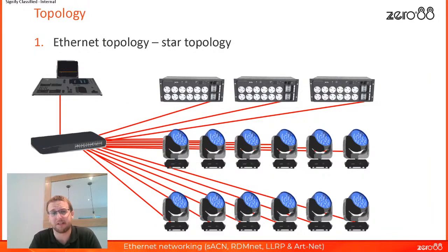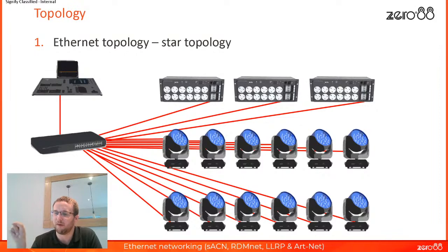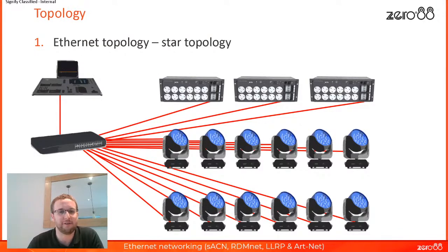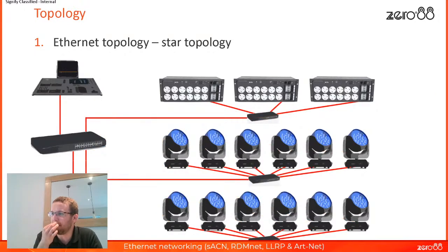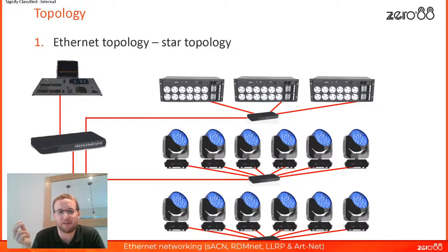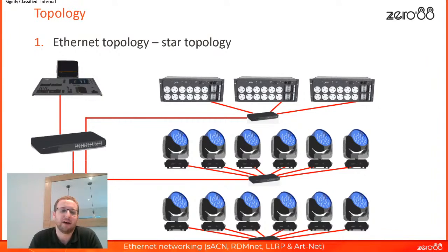An Ethernet topology is not a bus topology — it's a star topology, which means you have a box in the middle, and there needs to be a cable going to every single device: a cable to your console, a cable to each of your dimmers, a cable to each of your moving lights. You can imagine if those devices were in a circle with the box in the middle, that would look like a star. With multiple boxes you can reduce cabling somewhat, but it's still a lot more cable than we're used to with DMX, and that is quite a significant downside.